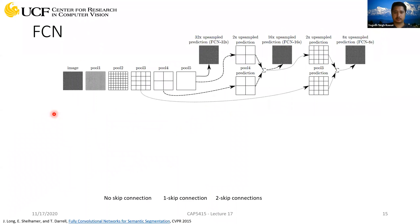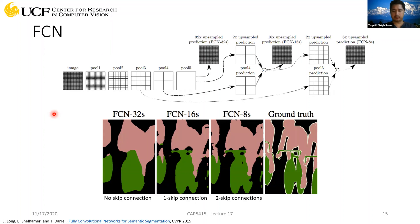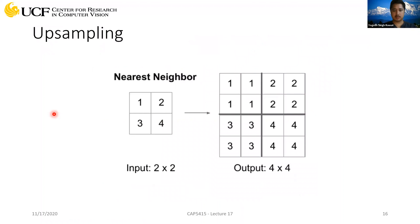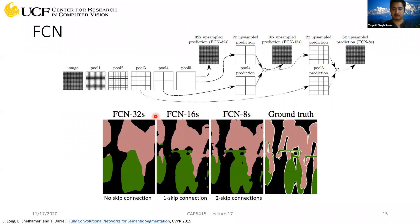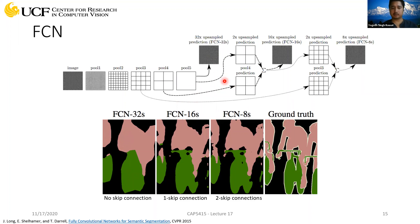So last lecture we were looking into fully convolutional networks for semantic segmentation, and we discussed how we can take any standard CNN architecture defined for classification and modify some of the later layers — converting the fully connected layers to fully convolutional using a one-by-one kernel. We can then predict activation maps that represent the required segmentation, and improve the quality by performing upsampling.